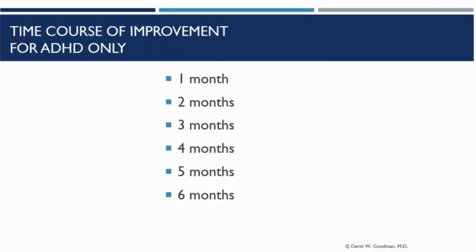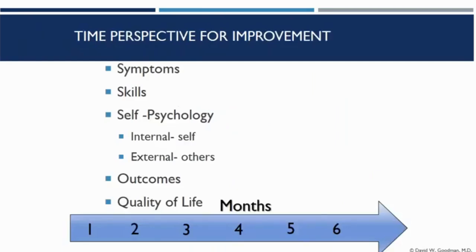Now let's get to specifics. We're going to talk about what happens after you get diagnosed and start treatment over the course of six months. We'll lay this out over six months. The first half of this talk is conceptual, then I'll dive into details. The first concept is: we have symptoms, we have skills, we have one's own psychology, we have the outcomes, and we have quality of life. Over what period of time do each of these categories improve?